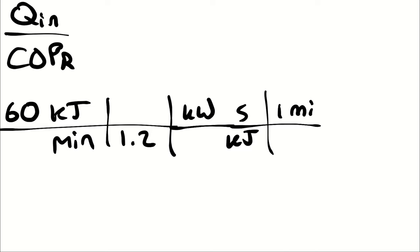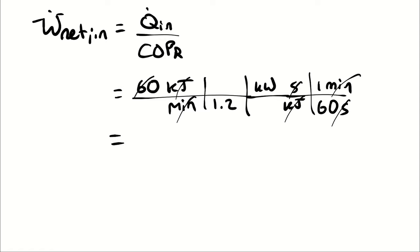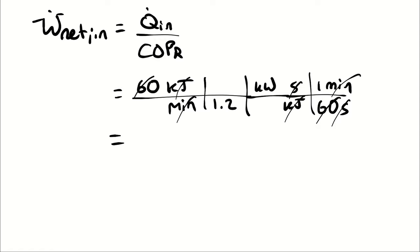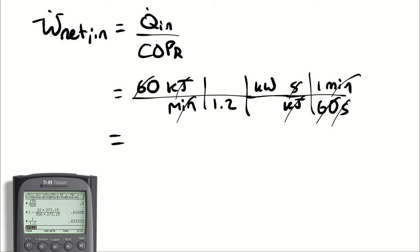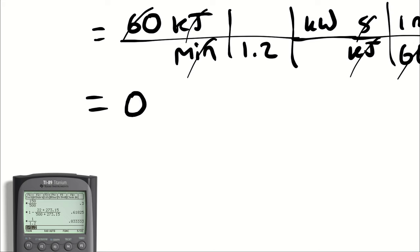So I have to convert from seconds to minute. There are 1 minute in 60 seconds. So if I take 60 divided by 60, and take that result, which is 1 and divided by 1.2, I will get my electrical power, which is 0.833 kilowatts.